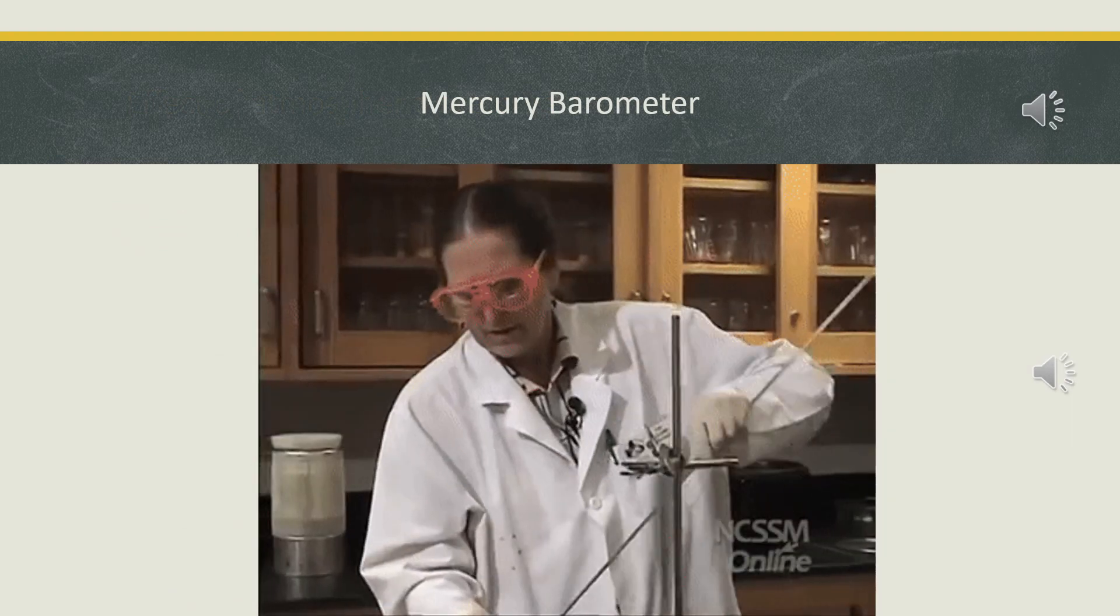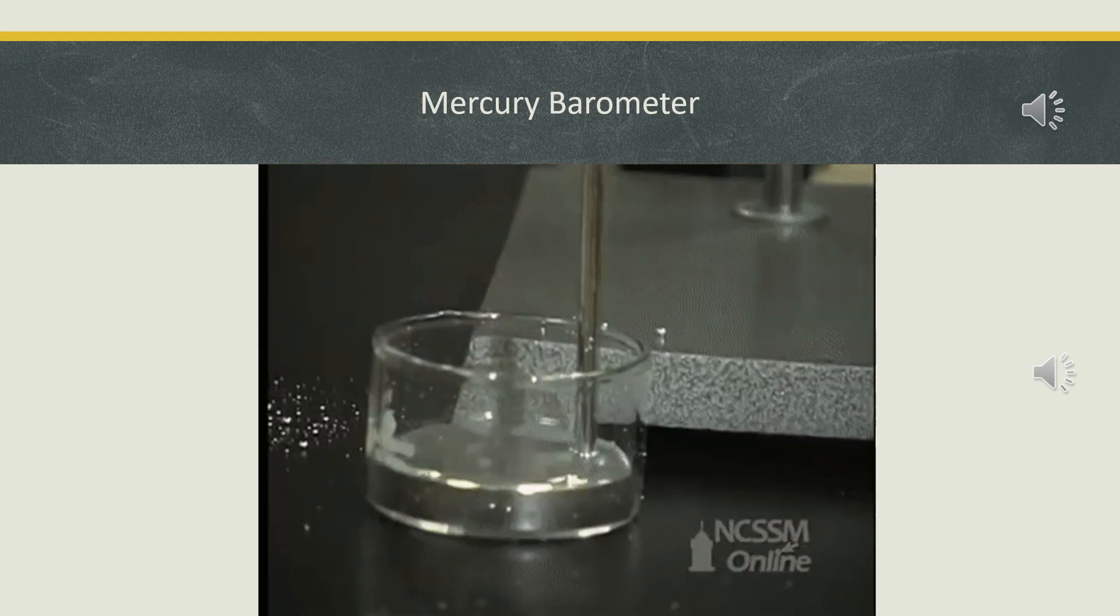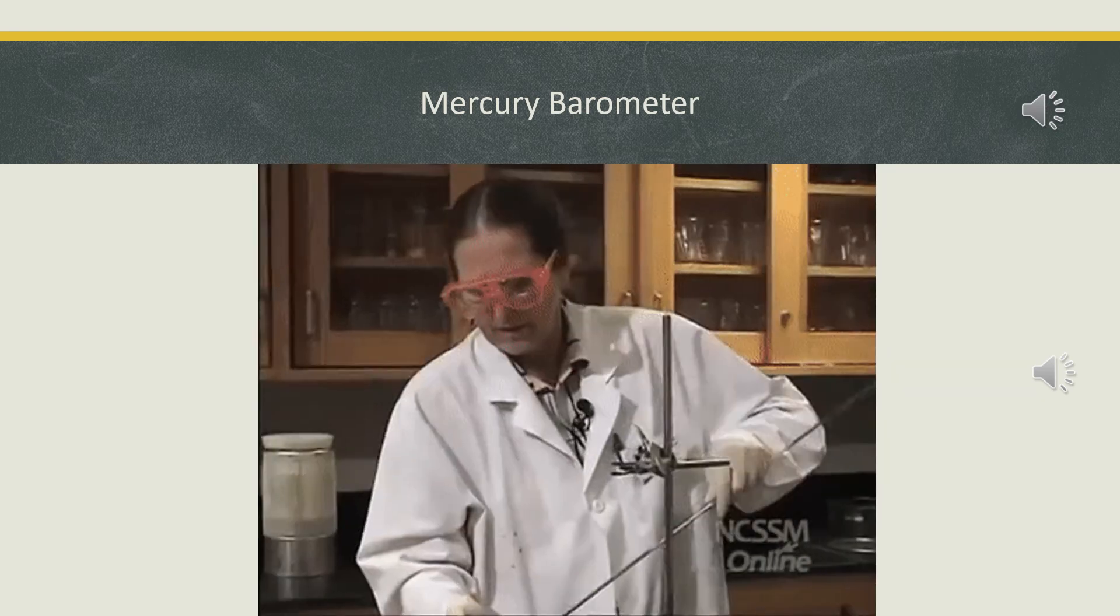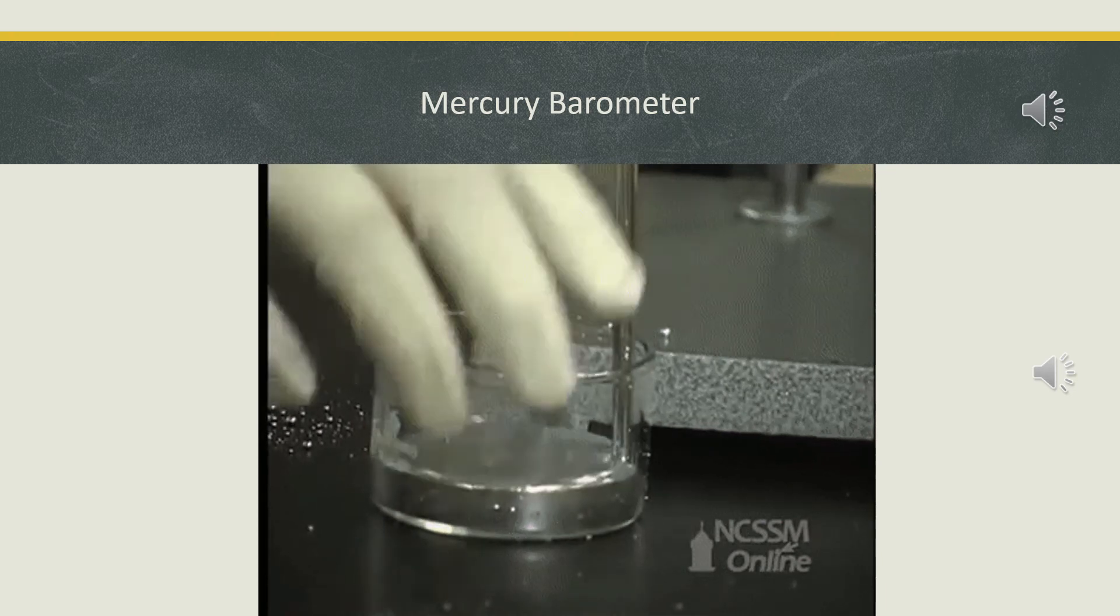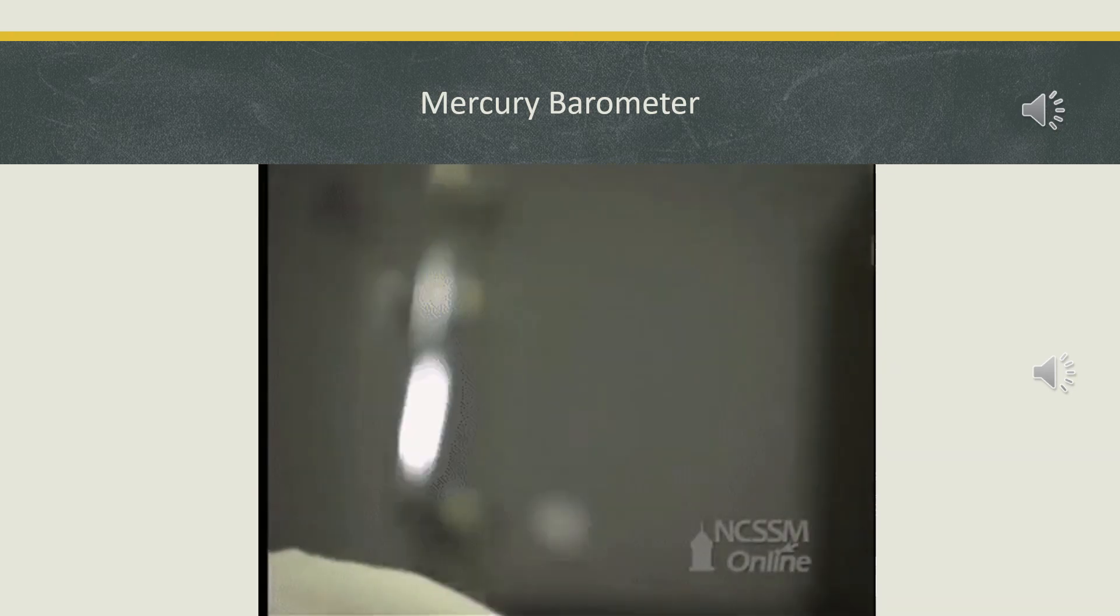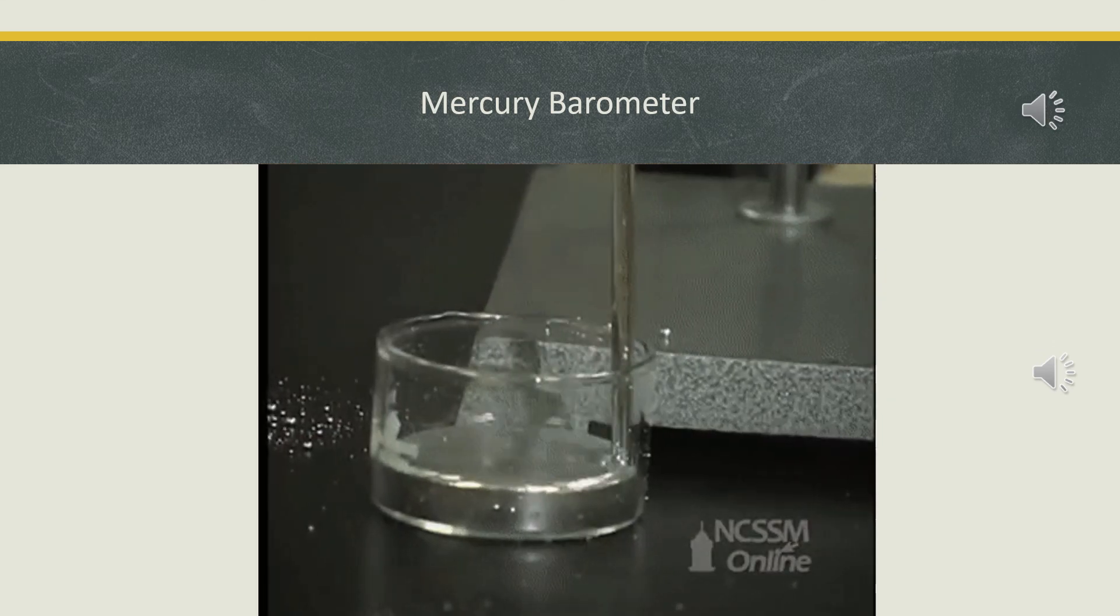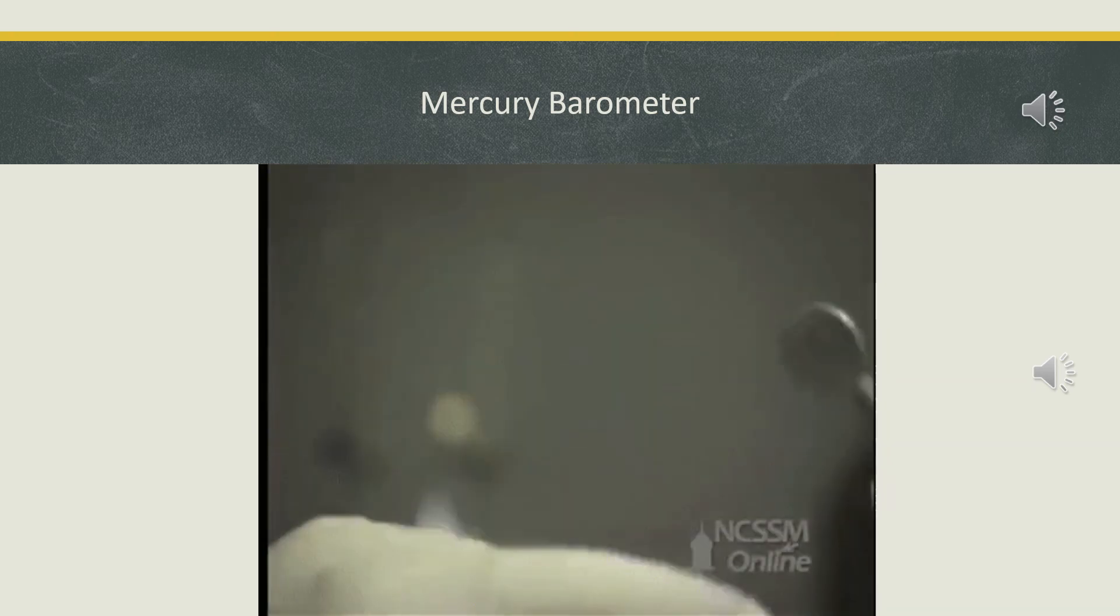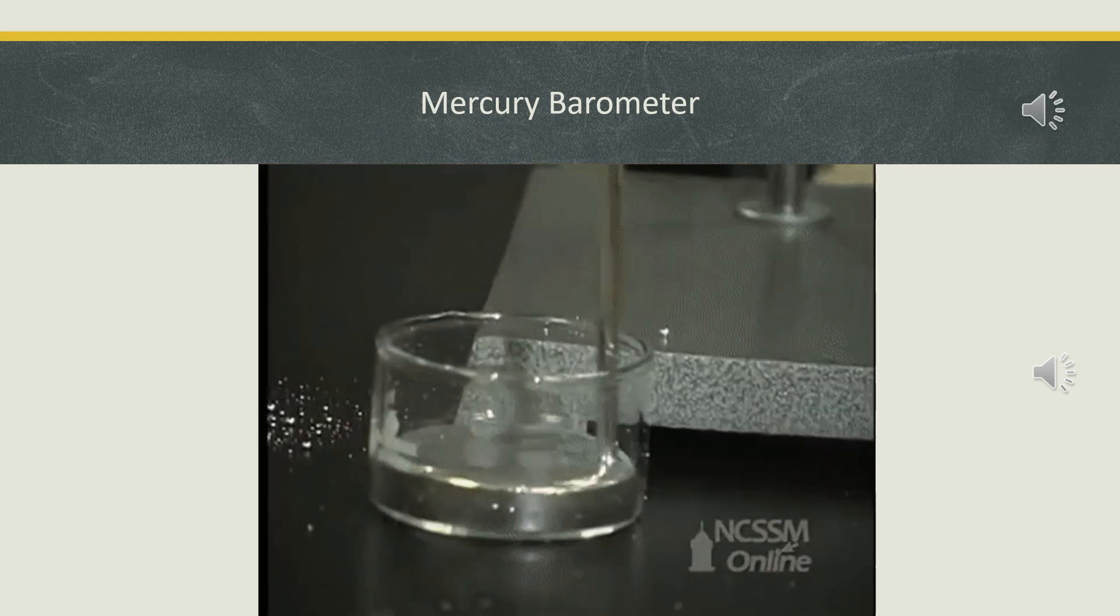Mercury barometer is the simplest device to measure atmospheric pressure at a location. It consists of a glass tube closed at one end, immersed in a container filled with mercury. Because of the atmospheric pressure, mercury rises in the tube, and the level of mercury helps us to measure the atmospheric pressure. In the video description section, you will find a link using which you can study more about barometers.